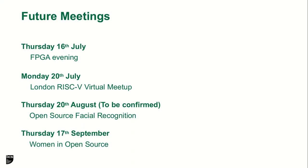To briefly announce our future meetings of the open source specialist group: on Thursday the 16th of July we have an FPGA evening, which is really related because FPGAs enable performance for a lot of applications. On Monday the 20th we have a virtual meetup in London about RISC-V processors. On Thursday the 20th of August we have open source facial recognition, and on Thursday the 17th of September we have women in open source.